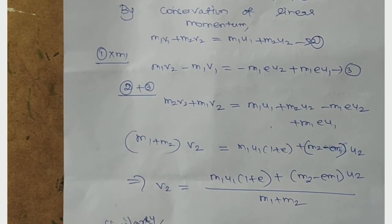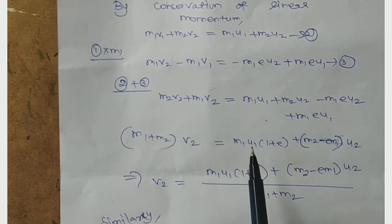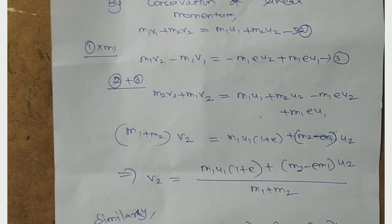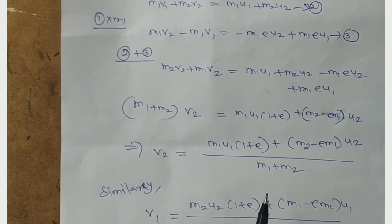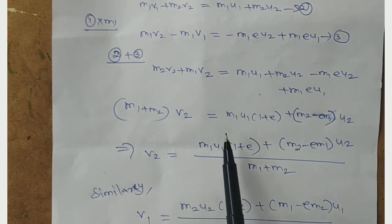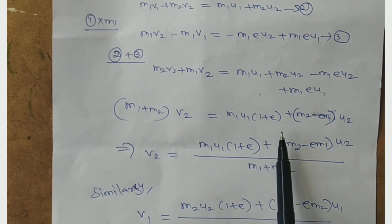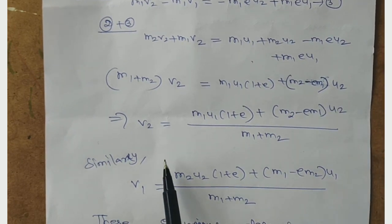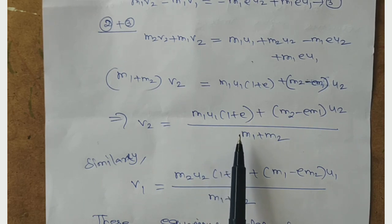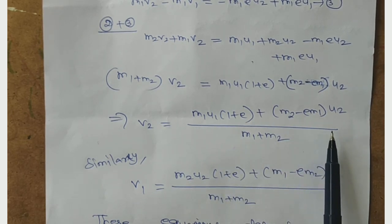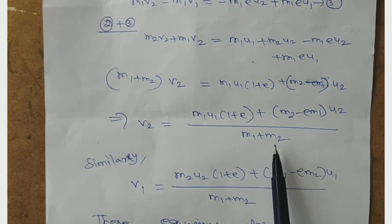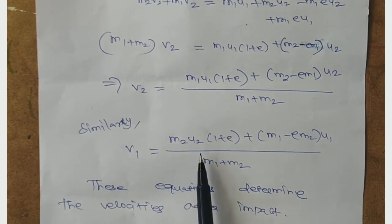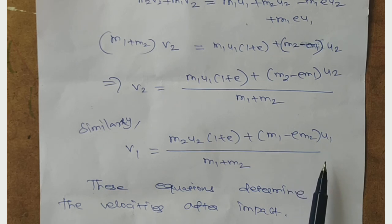This simplifies to M1V1 - M1V2 equals M1e(U2 - U1). Equation 3 is M2V2 + M1V2 equals M1U1 + M2U2 - M1e(U2 - U1). From this, (M1 + M2)V2 equals M1U1(1 + e) + M2U2 - M1eU2. So the velocity after impact V2 equals [M1U1(1 + e) + M2U2(1 - e)]/(M1 + M2). Similarly, V1 equals [M2U2(1 + e) + M1U1(1 - e)]/(M1 + M2).